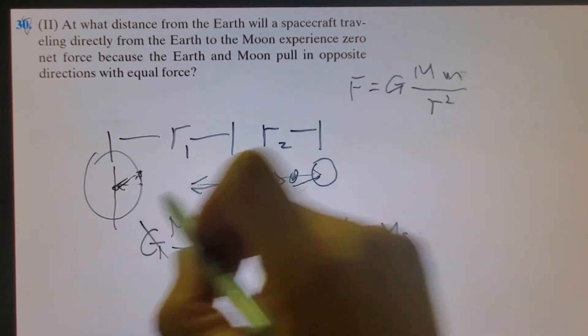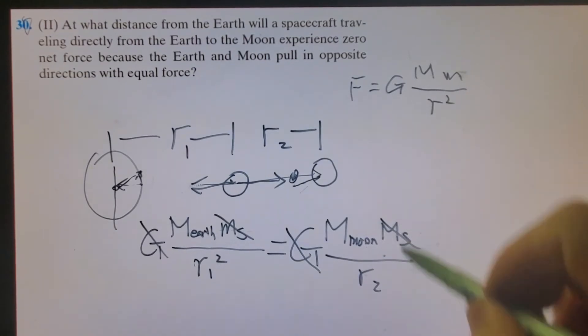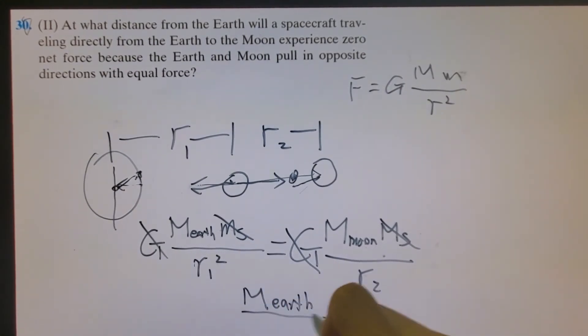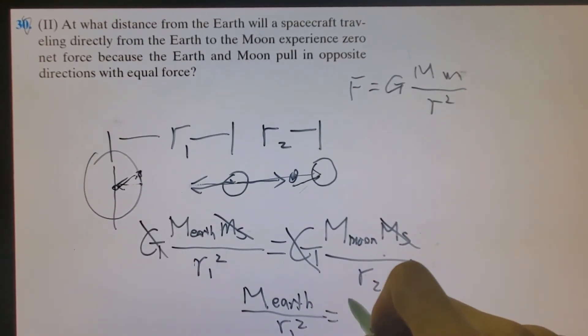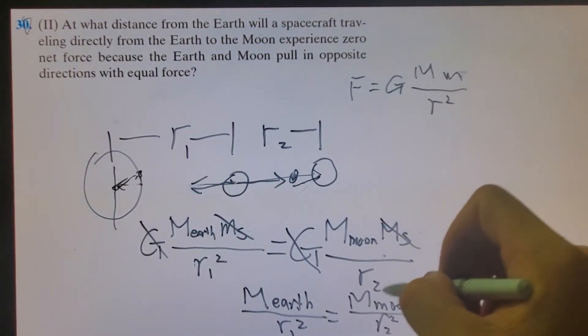So you can cancel out the G, and you can cancel out the mass of the spacecraft. So when the mass of the Earth divided by R1 squared, that is equal to the mass of the moon divided by R2 squared. When those are equal,